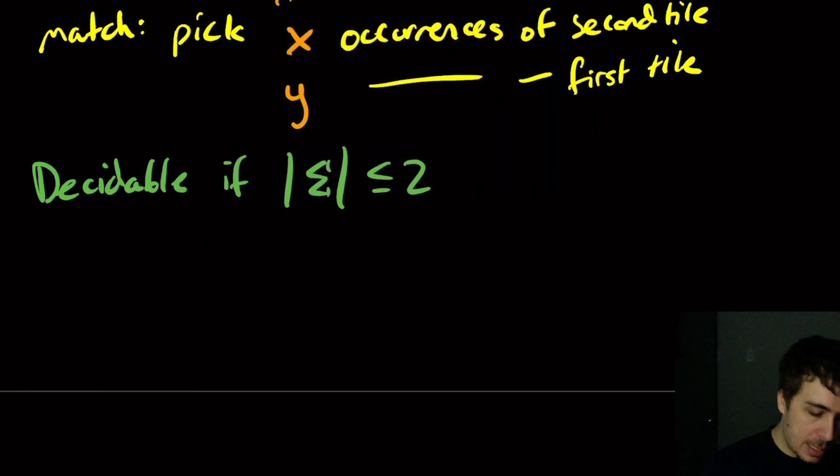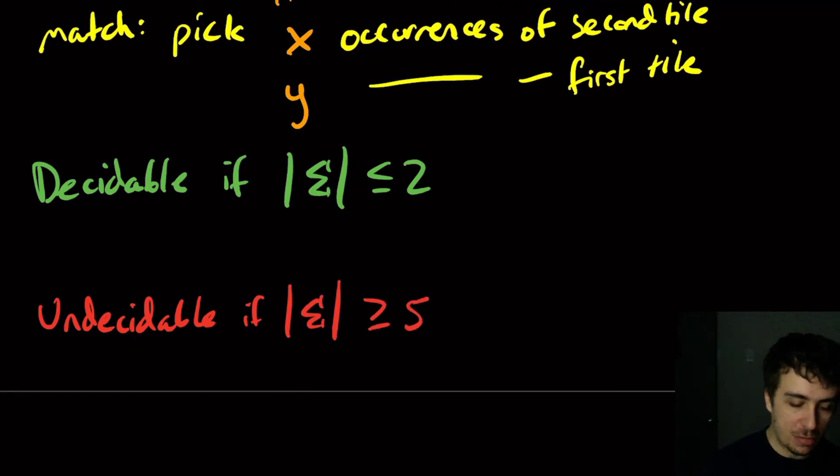It turns out to be undecidable if the size of the alphabet is at least five. So it turns out that there's a set of tiles with five different characters that is undecidable. The corresponding problem is undecidable,